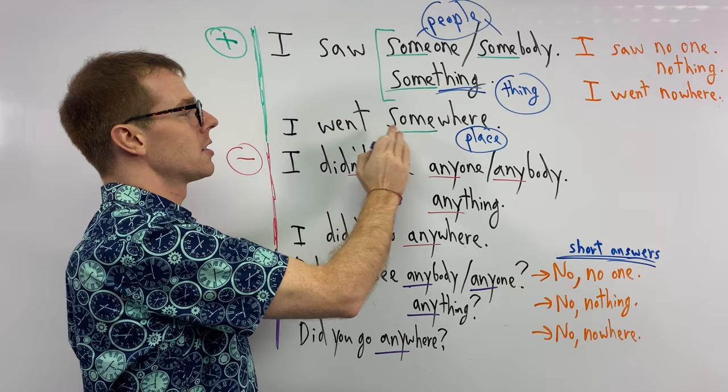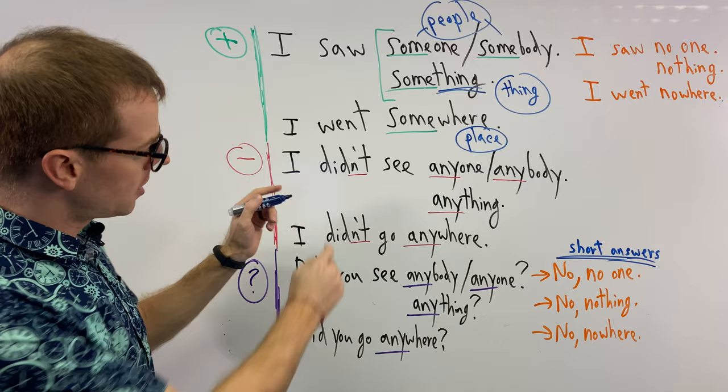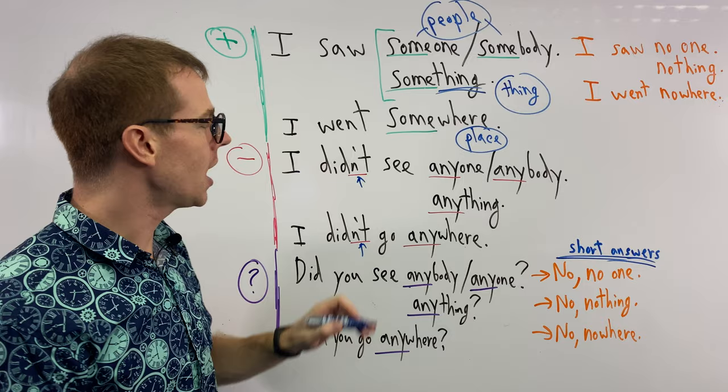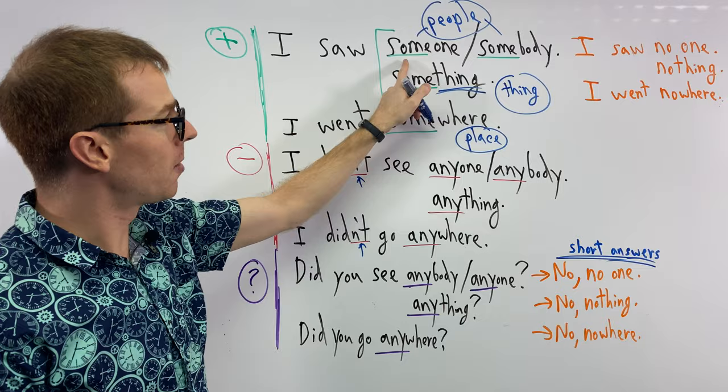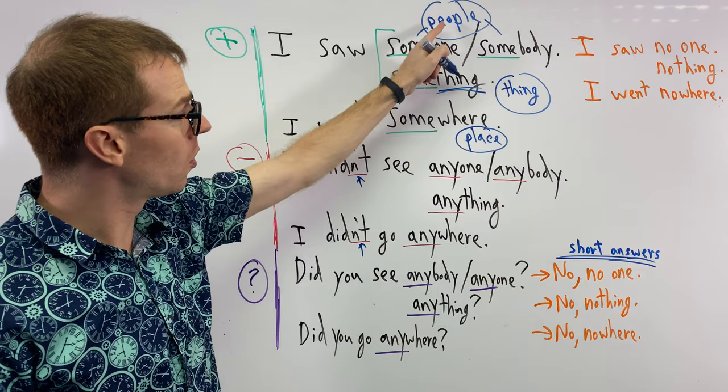If you want to use a negative sentence, negative sentences are right here, like the didn't. You can say, oh yeah, I didn't see, same as the beginning, right? The one, the buddy, someone, somebody, people. If I go down here, anyone, anybody, also for the people. But this again, our negative.